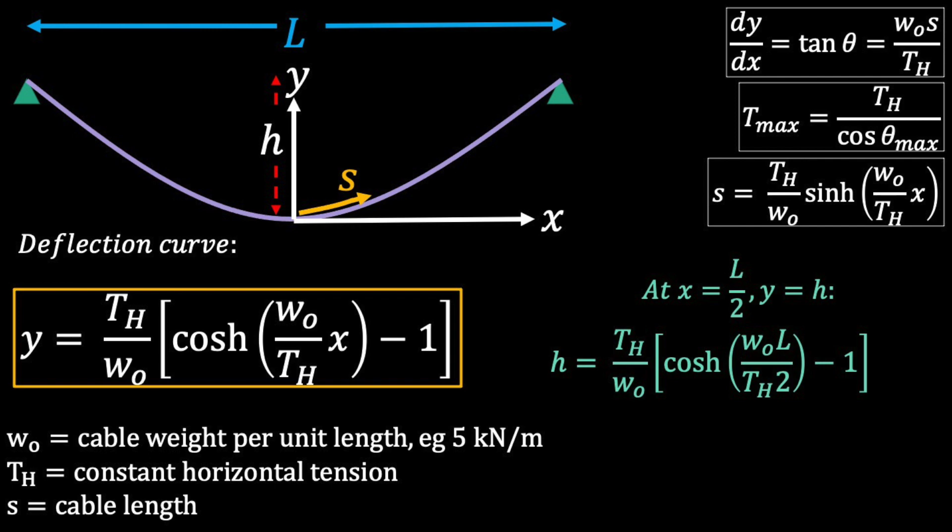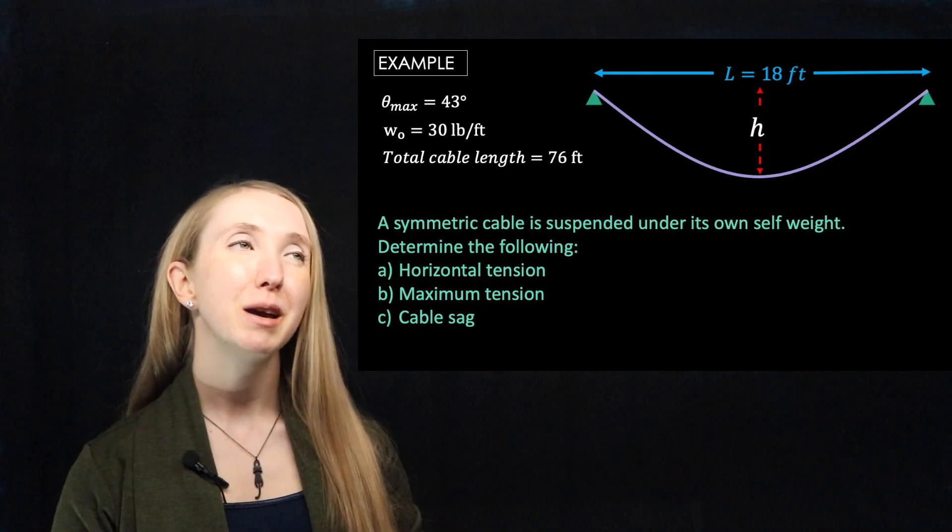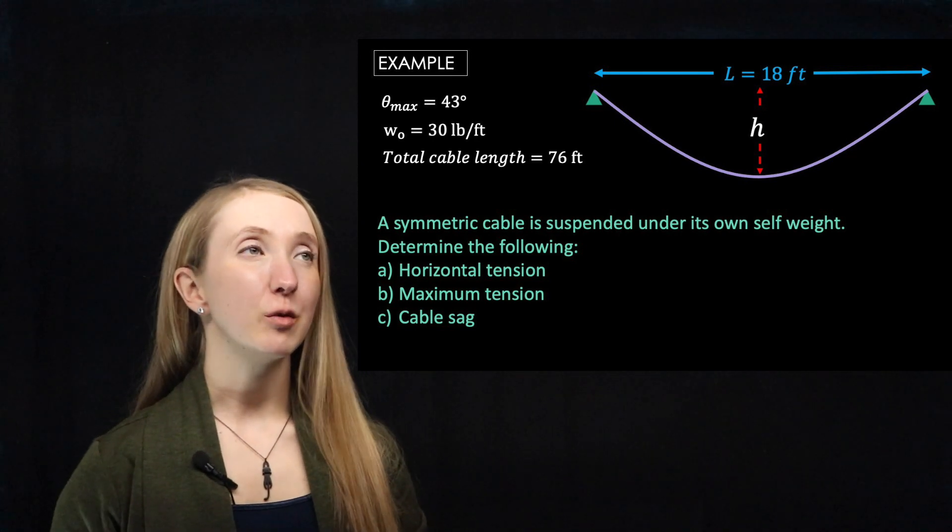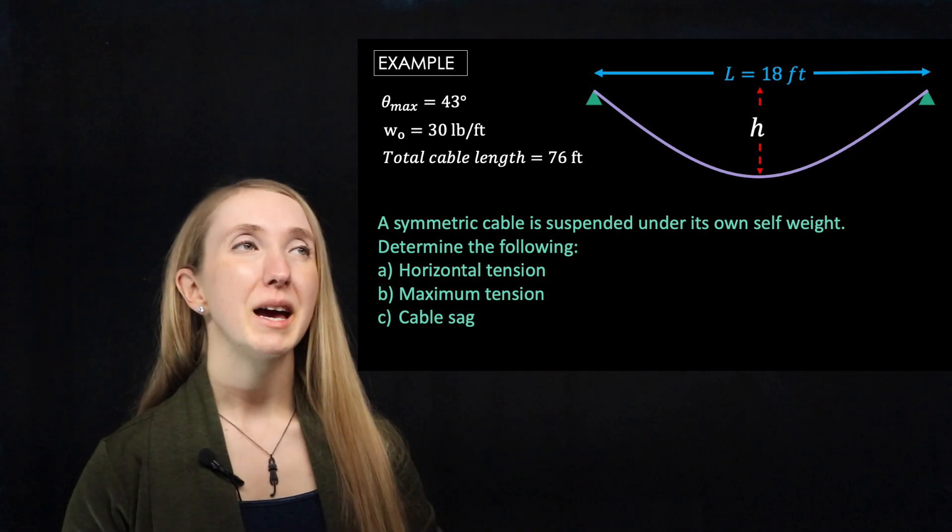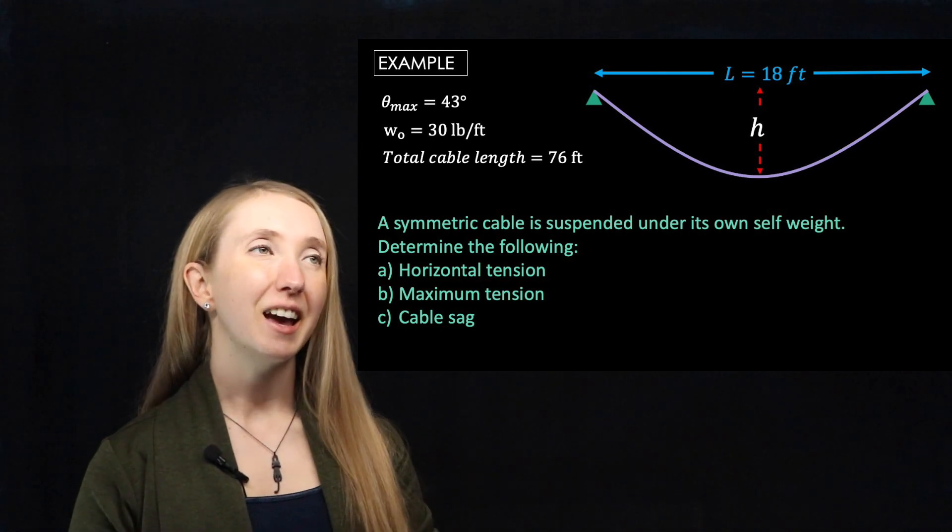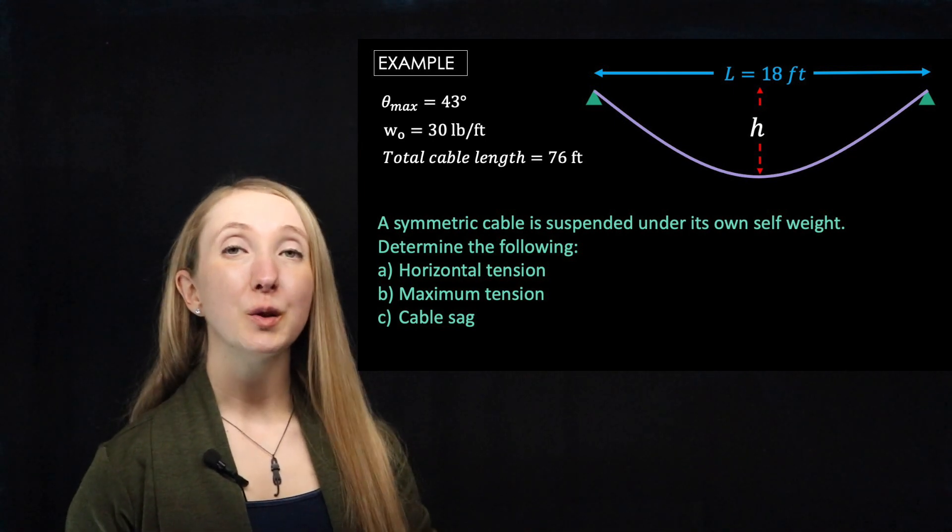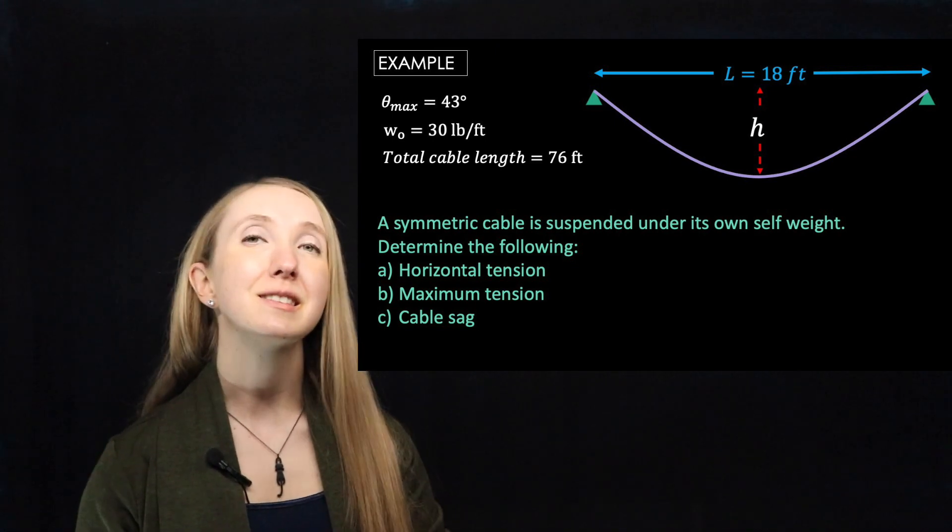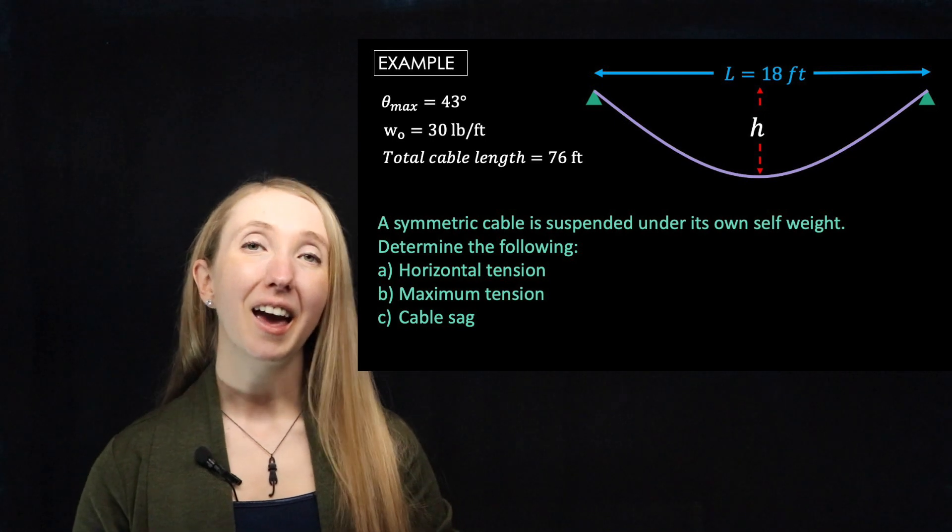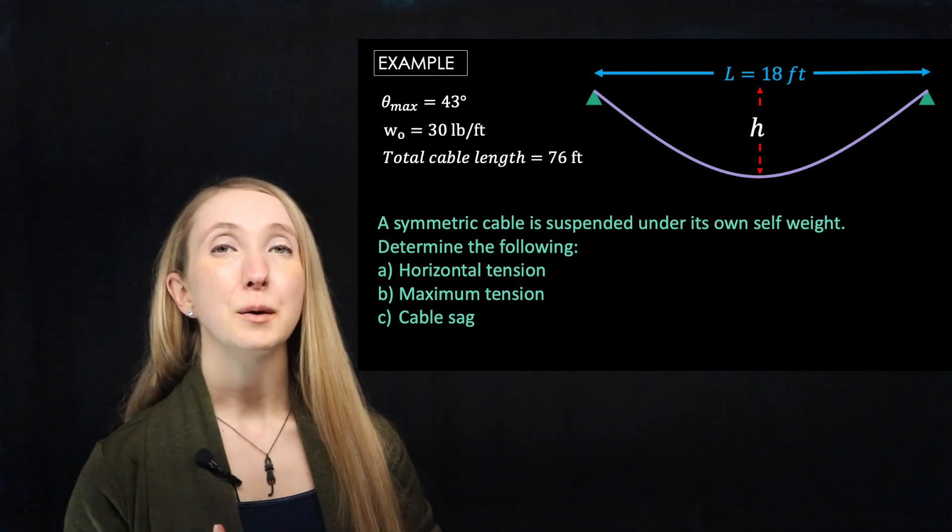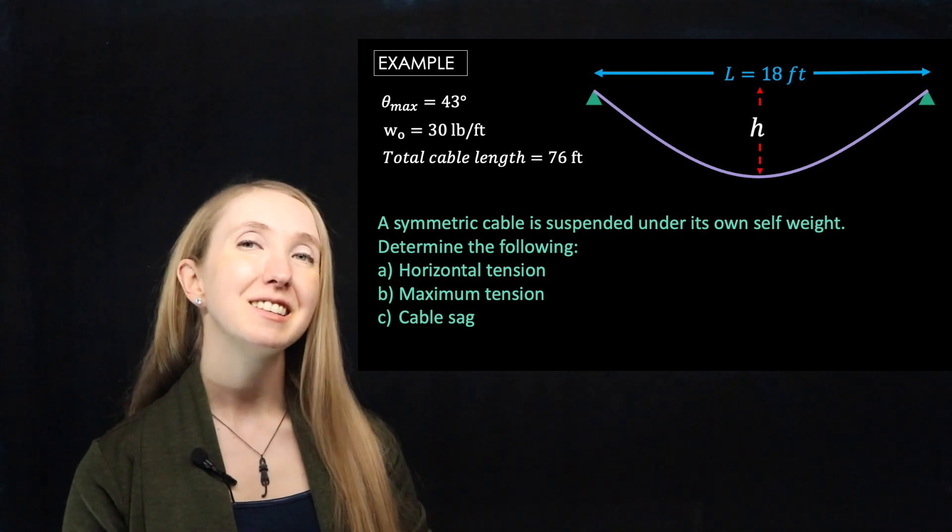Let's do a quick example so you can see these guys in action. We have a symmetric cable suspended from two points, and it's loaded with just the self weight. We know that the maximum angle the cable makes is 43 degrees, and the cable has a weight of 30 pounds per foot. The total cable length, we're told, is 76 feet. And we're asked to find the horizontal tension, the maximum tension, and the cable sag.